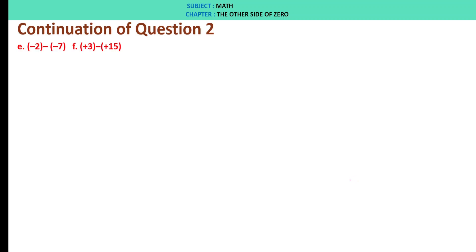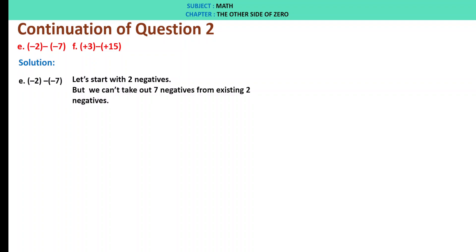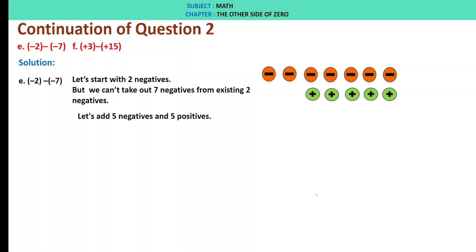E: minus 2 minus of minus 7. Let's start with 2 negatives. We can't take out 7 negatives from existing 2 negatives. So let's add 5 negatives and 5 positives. We strike out 7 negatives and are left with 5 positives. Therefore, minus 2 minus of minus 7 is plus 5.